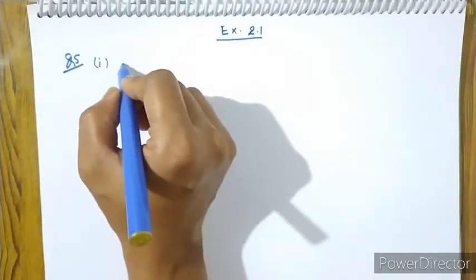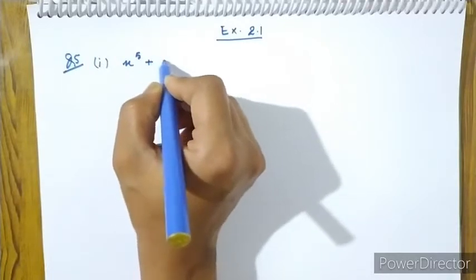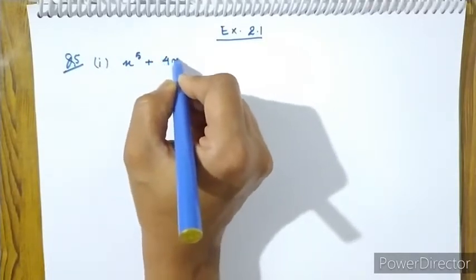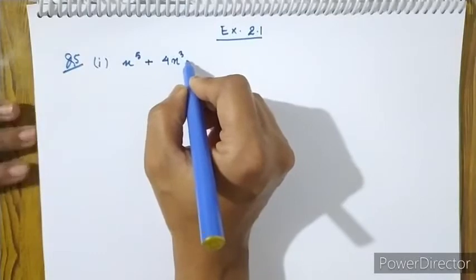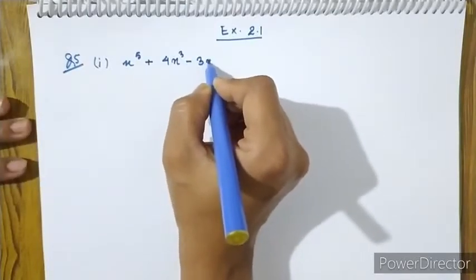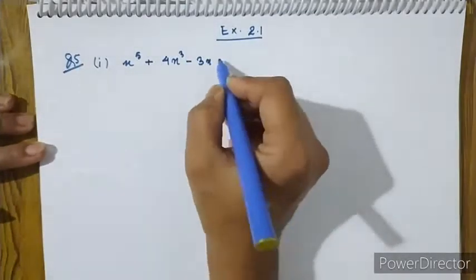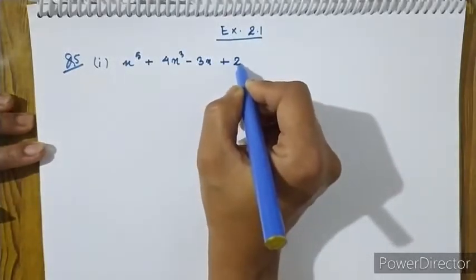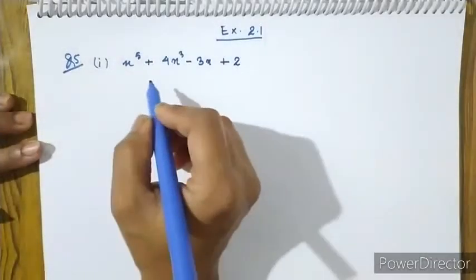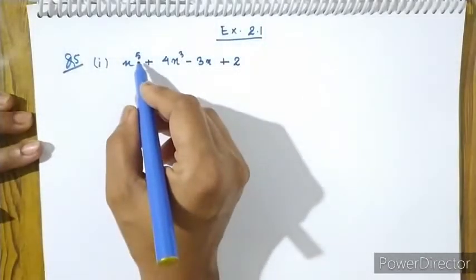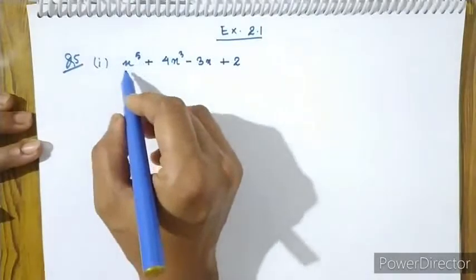Let me see from number one: x to the power 5 plus 4x cubed minus 3x plus 2. Then x to the power 5 plus 2.